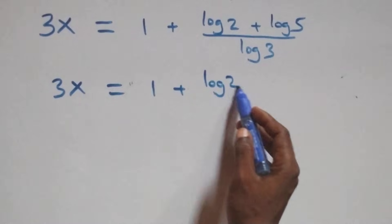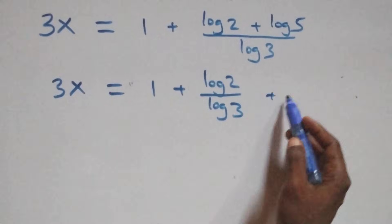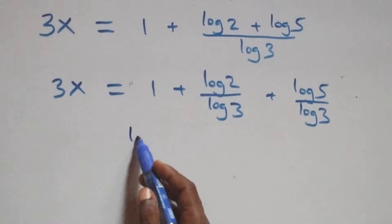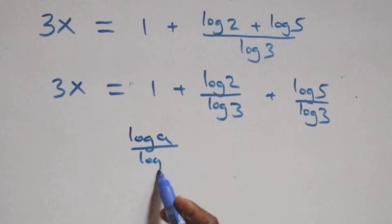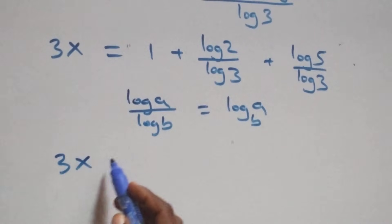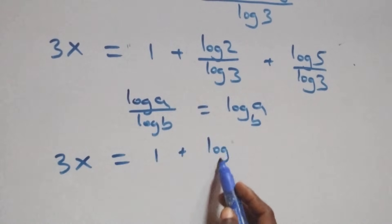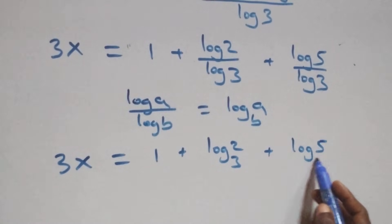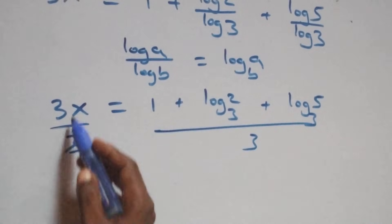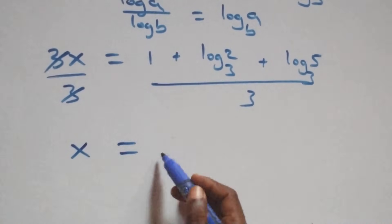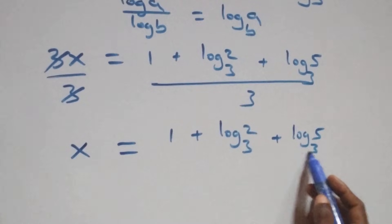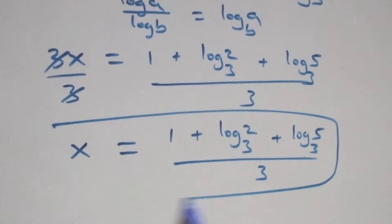So we have 3x equals 1 plus log 2 over log 3 plus log 5 over log 3. We apply the change of base rule: log A over log B equals log A to base B. This gives 3x equals 1 plus log 2 base 3 plus log 5 base 3. Dividing both sides by 3, x equals one-third times 1 plus log 2 base 3 plus log 5 base 3.